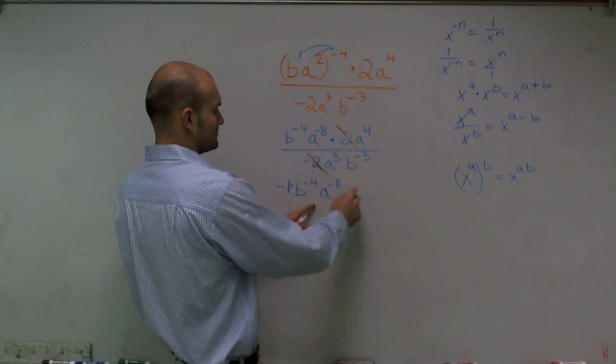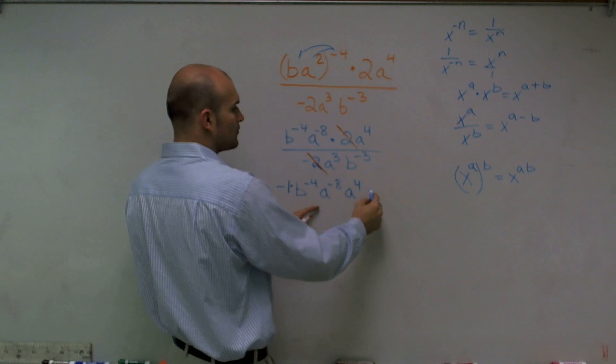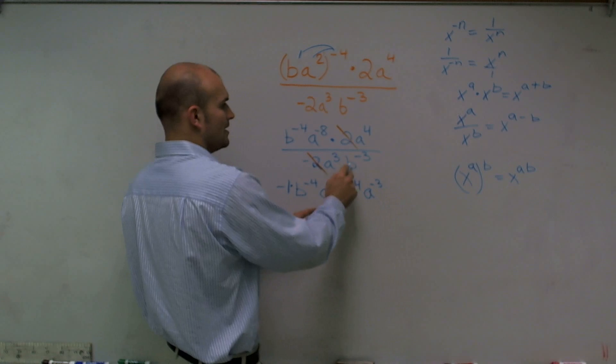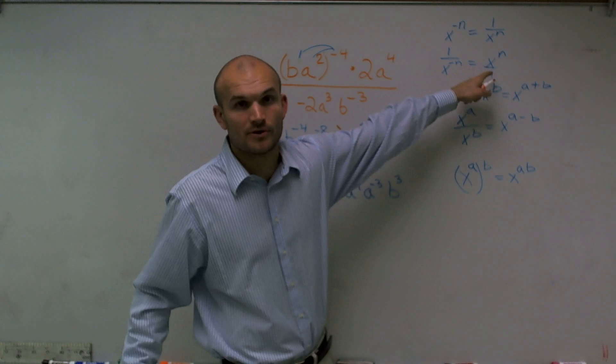A to the negative 8th, and then I have a to the 4th. Now, a to the 3rd up top would be a to the negative 3rd, b to the negative 3rd up top would be b to the 3rd. That's me using my negative exponent rule.